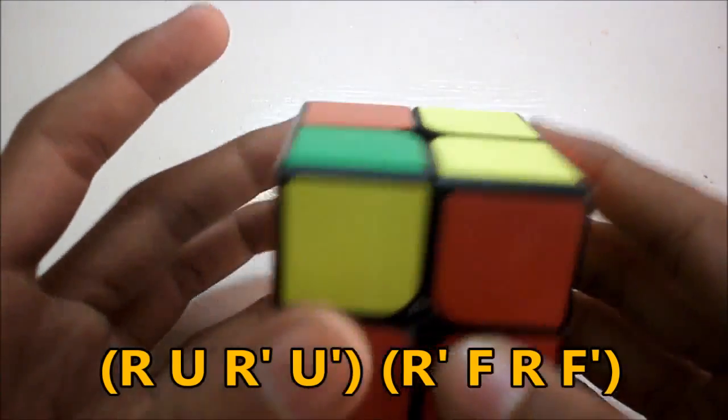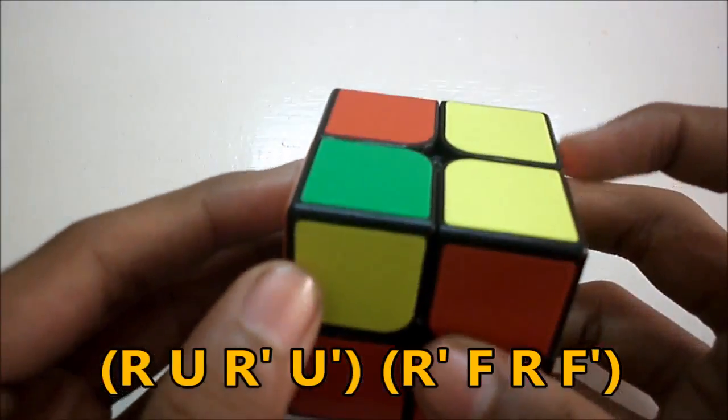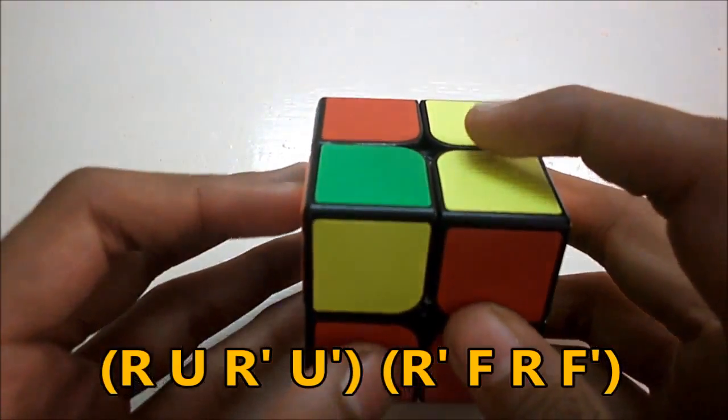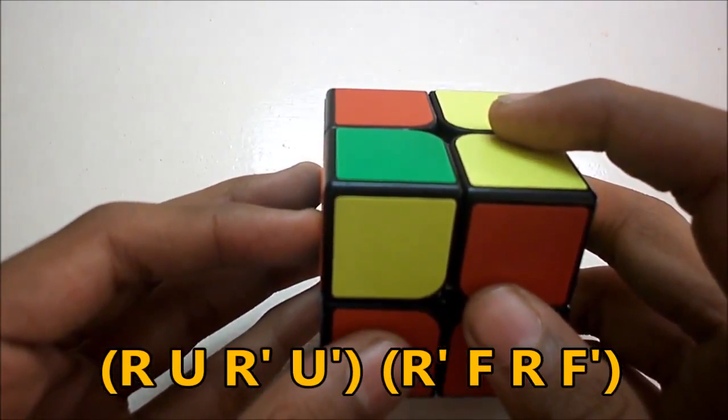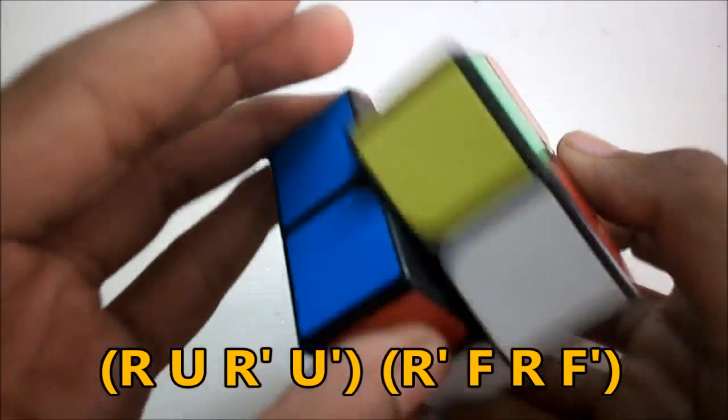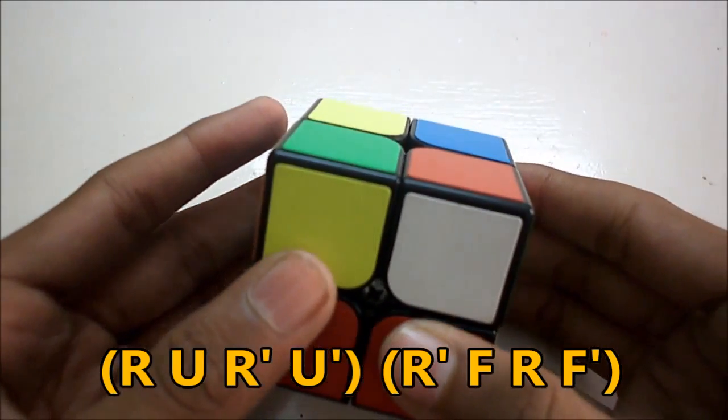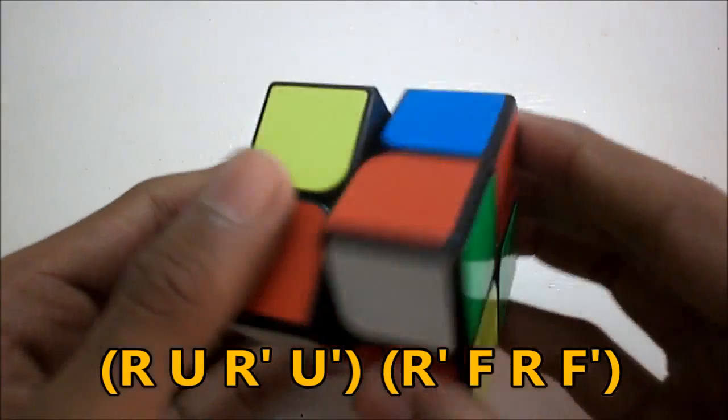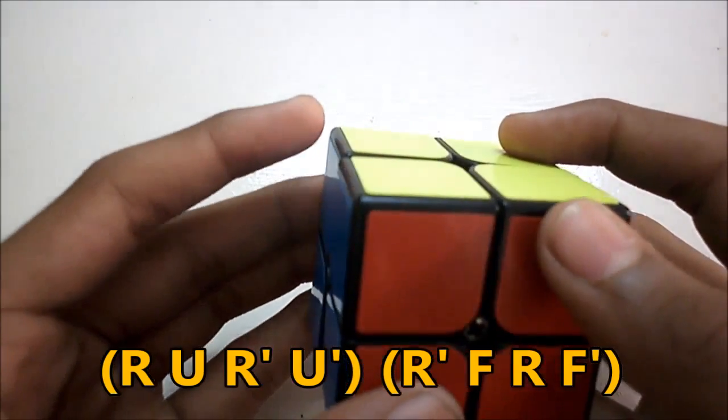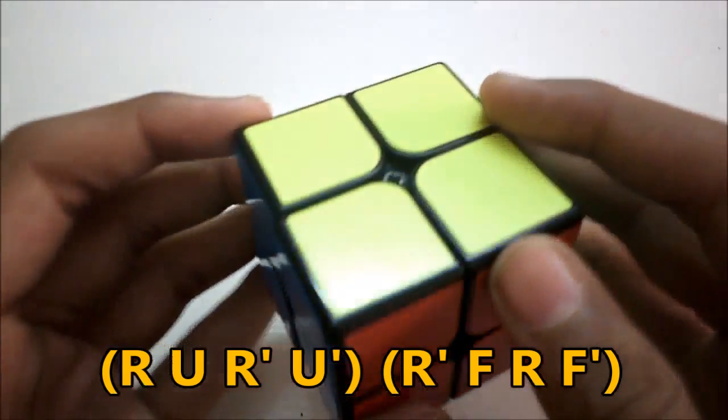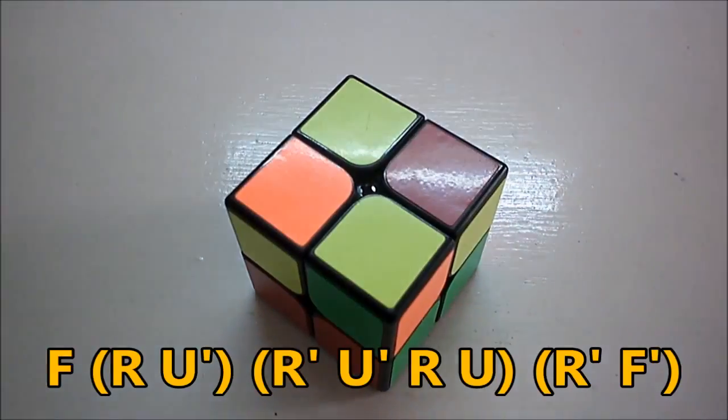So the next case is kind of same thing except these two pieces are opposite from each other. So holding the cube like this you do R U R' U' which is the sexy move and R' F R F' which is called the sledgehammer and that solves it.